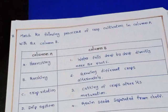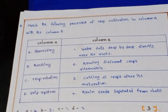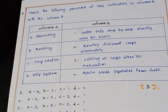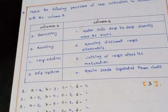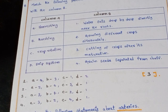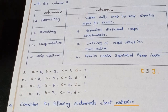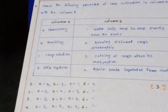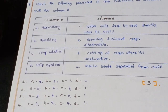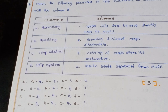Eighth question — very important: Match the following process of crop cultivation. Column A: harvesting, threshing, crop rotation, drip system. Column B: water falls drop by drop directly near the roots; growing different crops alternately; cutting off crops after maturation; grain seeds separated from chaff. The right answer is option three — A3, B4, C2, D1. Harvesting is cutting of crops after maturation; drip irrigation is water falling drop by drop near the roots.